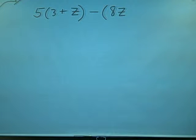Alright, here we have 5 times parentheses 3 plus z - I like to put a bar on this z so it doesn't look like a 2 - minus, and then parentheses again, 8z plus 9. Close it up, equals negative 4z.